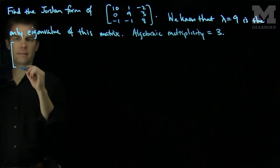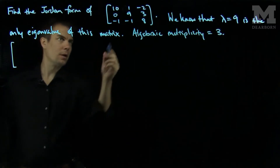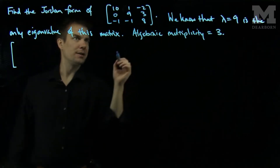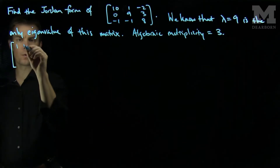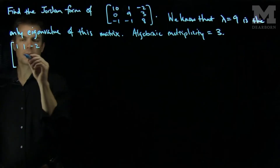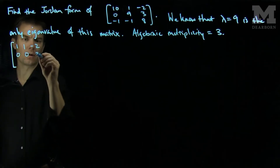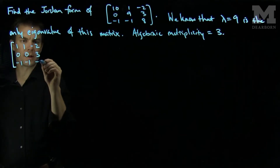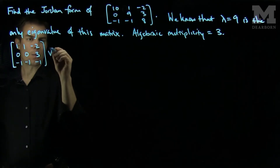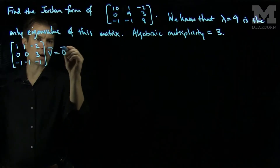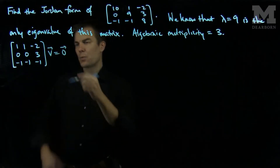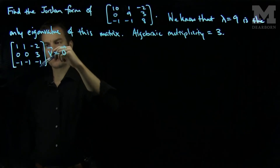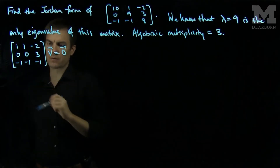So if I want to find an eigenvector, I will find something in the kernel of A minus 9 times the identity. This matrix minus 9 times the identity will be: 1, 1, negative 2, 0, 0, 3, negative 1, negative 1, negative 1. I want a vector v such that this outputs the zero vector. We can see that the third component of v has to be zero since all of these numbers are different and I have two zeros over here.